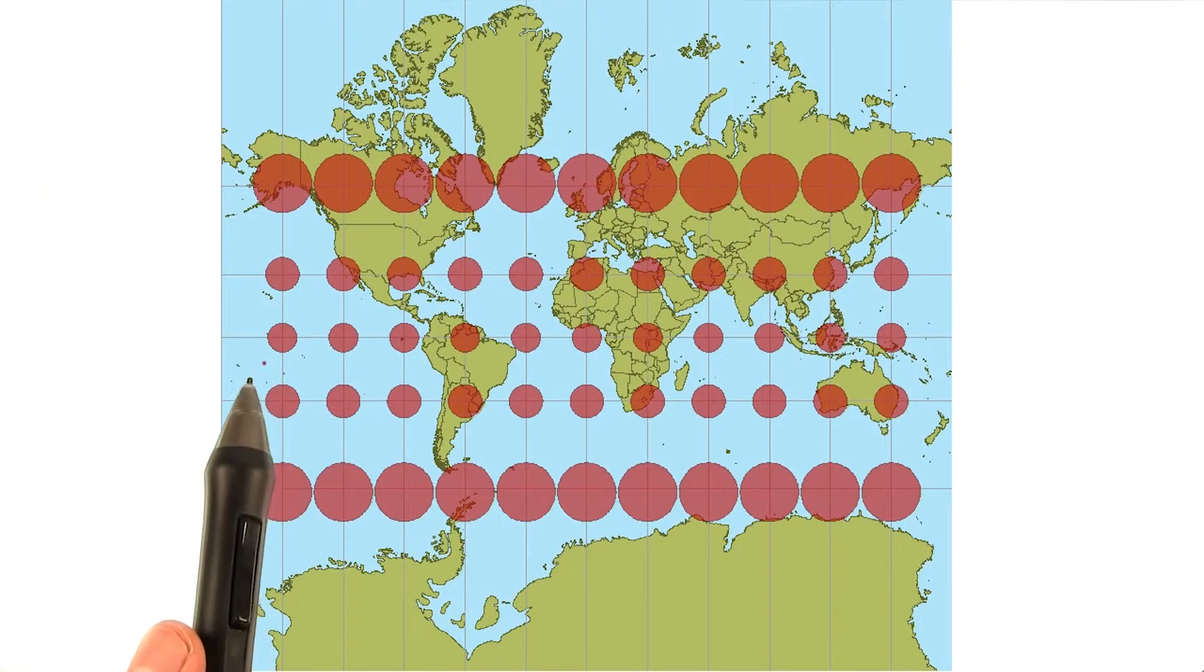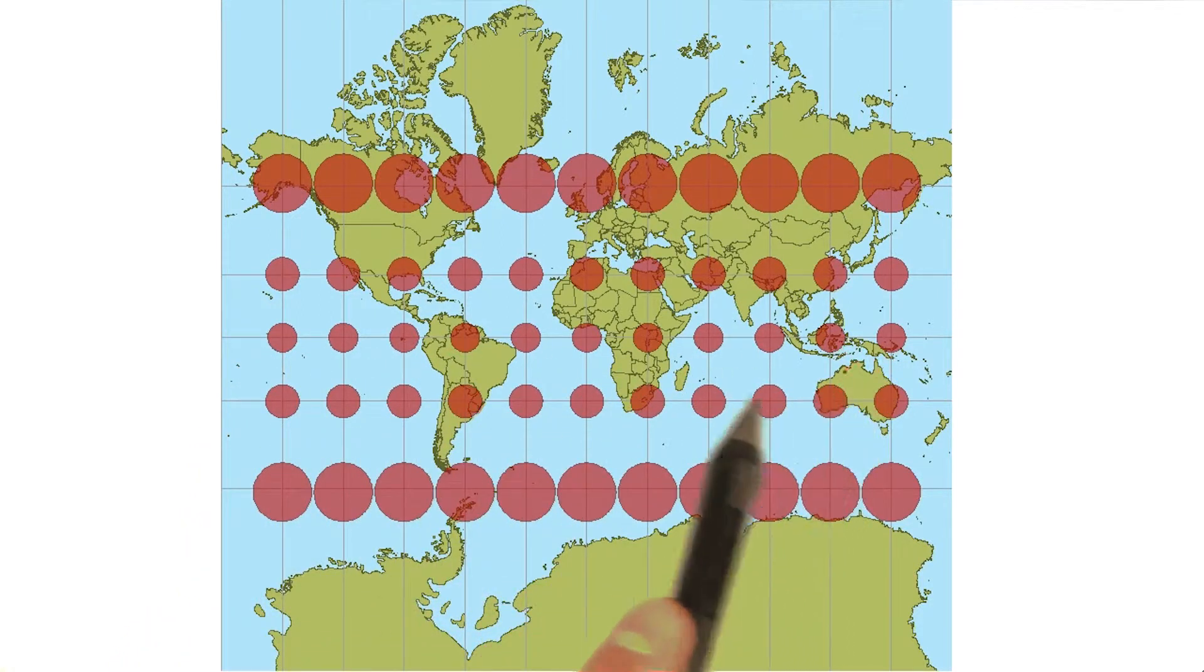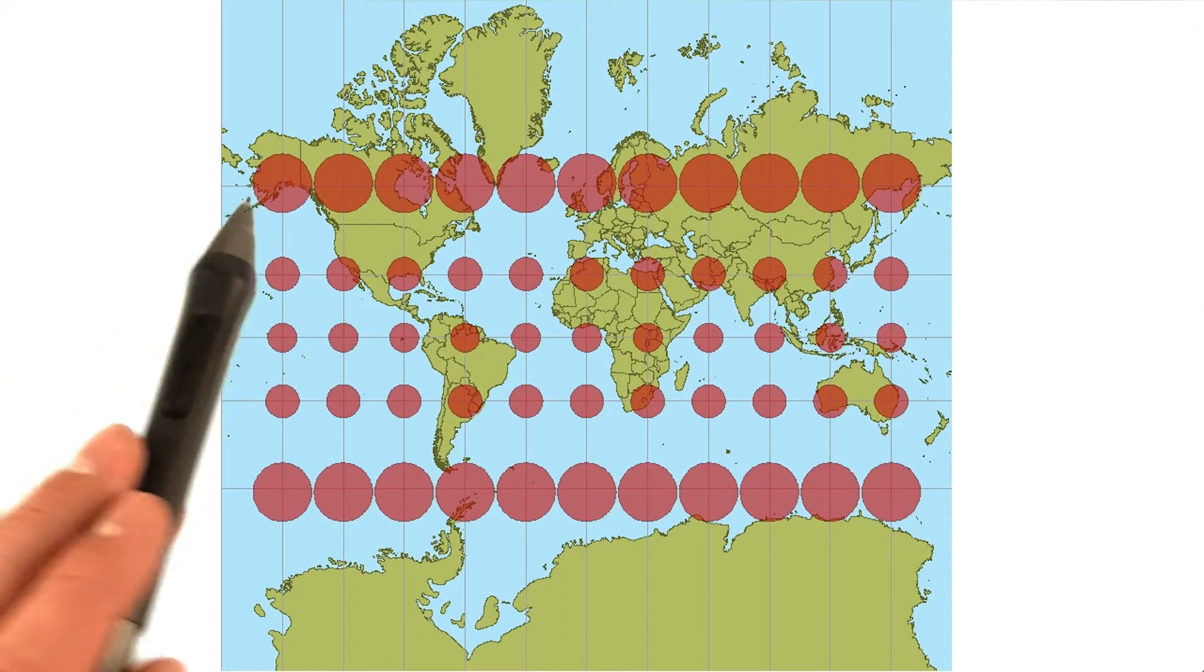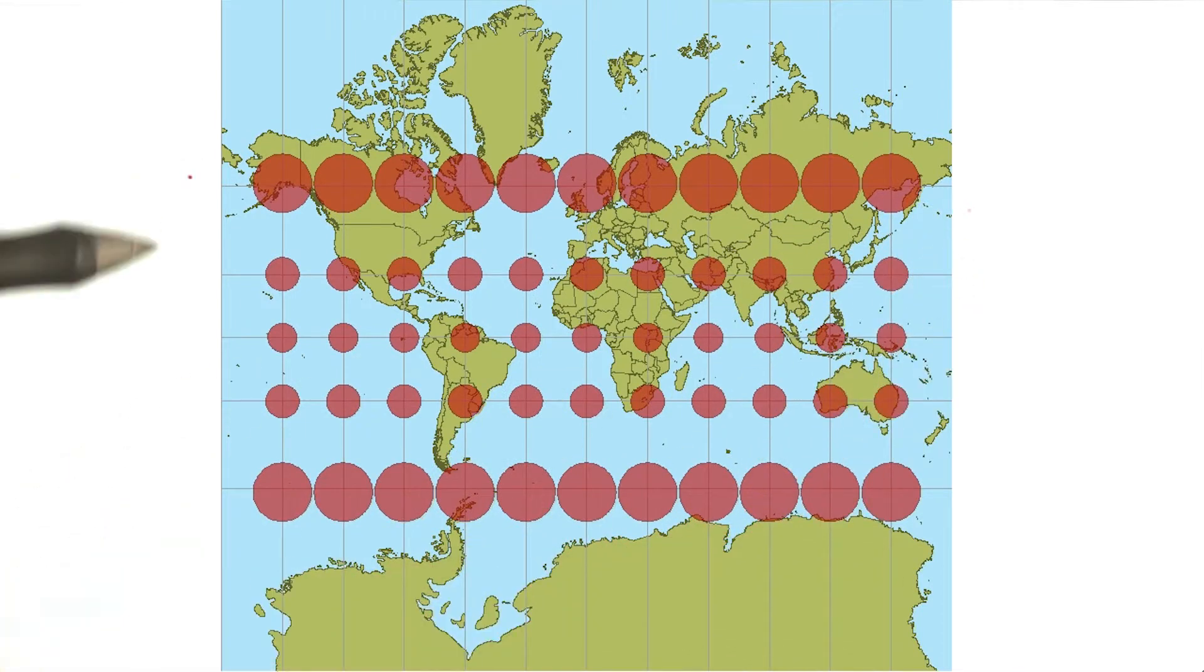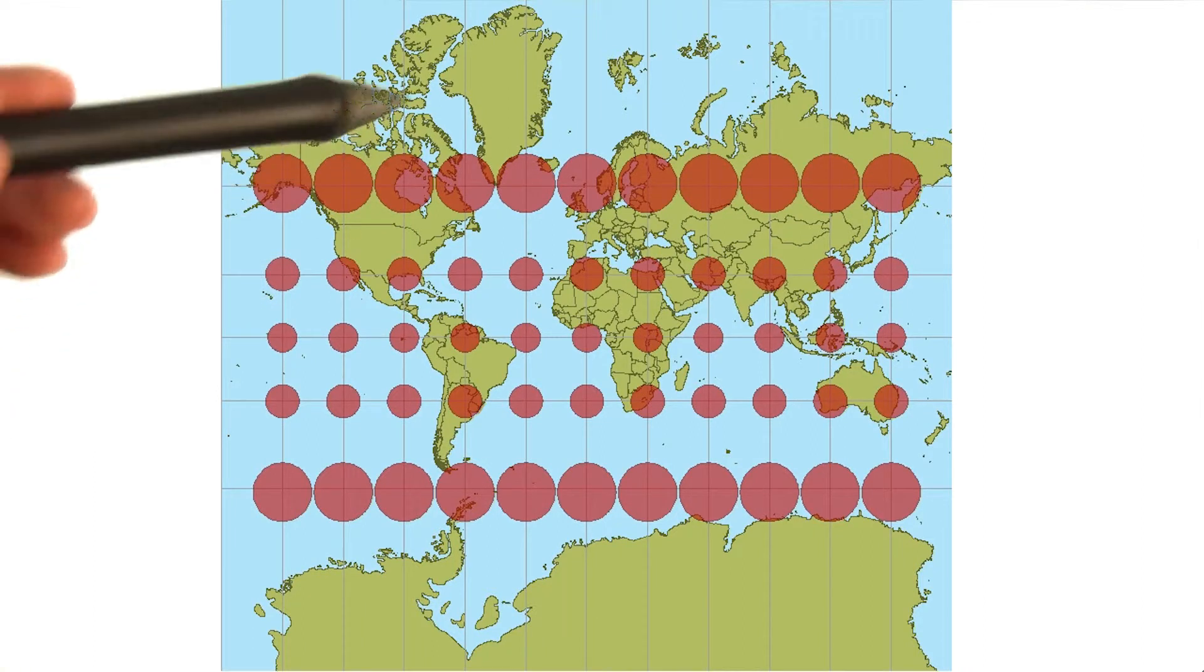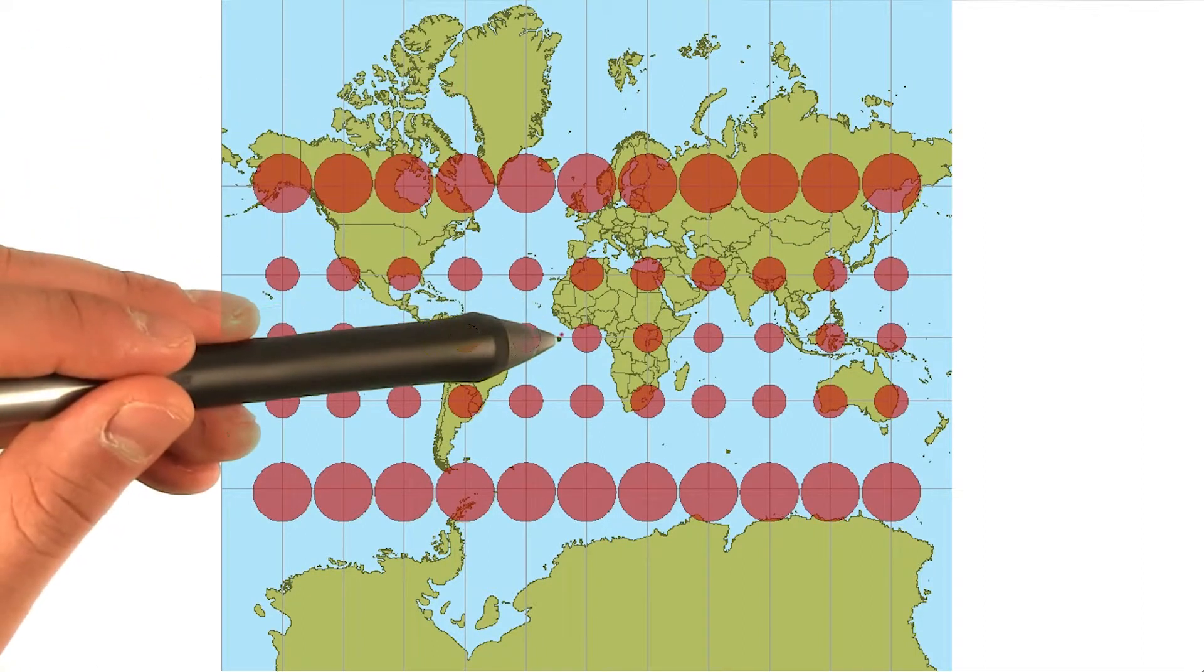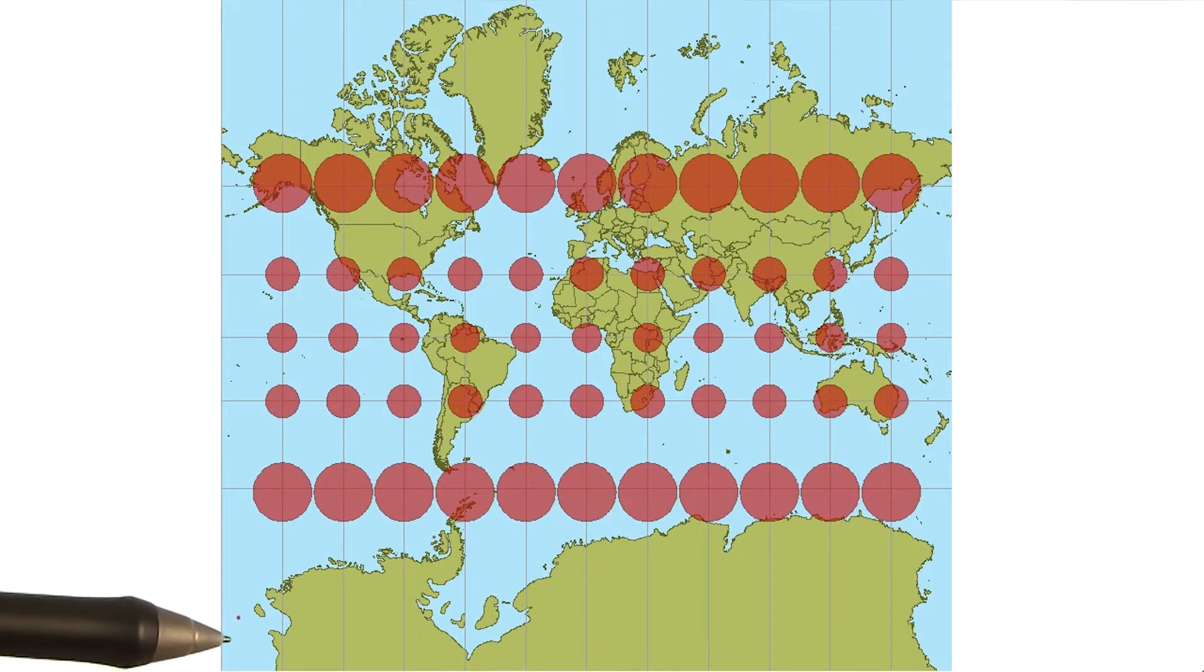One thing of note is that the Mercator projection actually preserves area across a latitude line. So even if you are very north, going across the same latitude line, all the circles are equally distorted. If you've ever wondered why Alaska looks about as big as the entire United States, and Greenland looks bigger than Africa, it's simply because the Mercator projection vastly distorts countries or areas so far north and south of the equator.